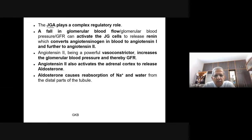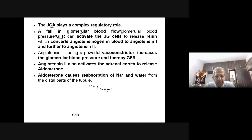A fall in glomerular blood flow — that is, a fall in glomerular filtration rate below 125 ml per minute — activates the JG cells. When activated, these JG cells release the hormone renin.